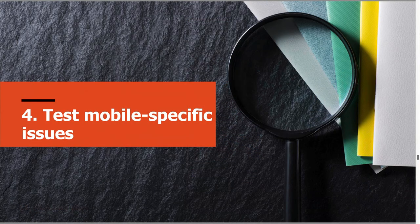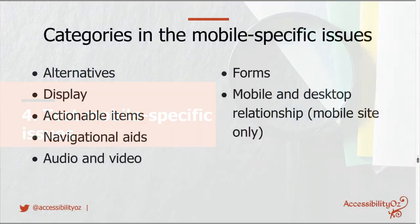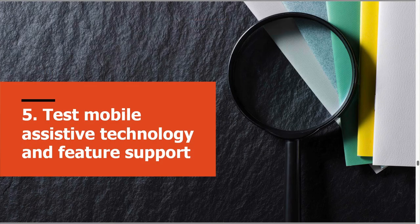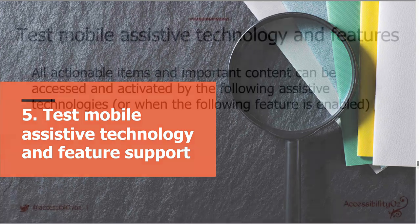The next step is test mobile specific issues. We have different categories: alternatives, display, actionable items, navigational aids, audio and video forms, and the mobile and desktop relationship. And then the fifth step is test mobile assistive technology and feature support.